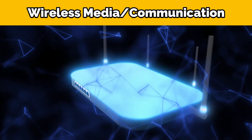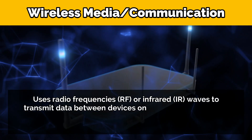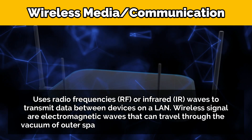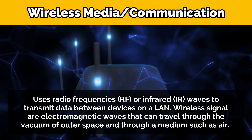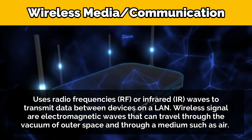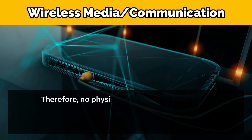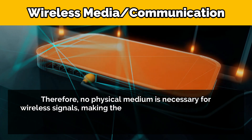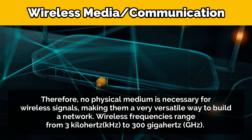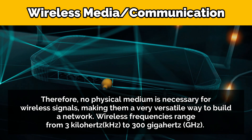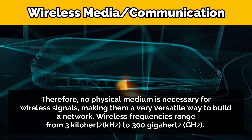Wireless media uses radio frequencies or infrared waves to transmit data between devices on a LAN. Wireless signals are electromagnetic waves that can travel through the vacuum of outer space and through mediums such as air, so no physical medium is necessary. This makes wireless a very versatile way to build a network. Wireless frequencies range from 3 kilohertz to 300 gigahertz.